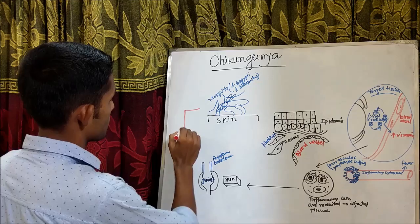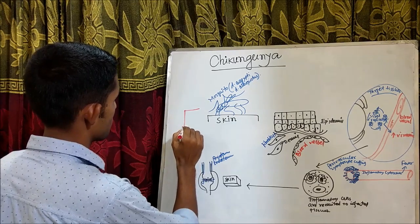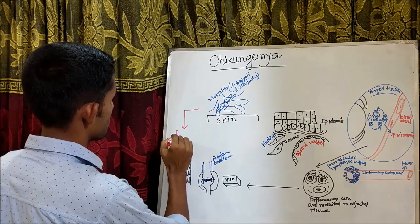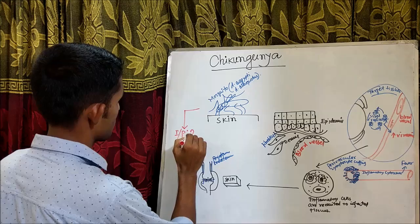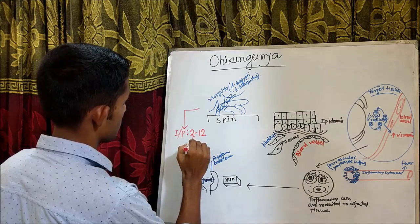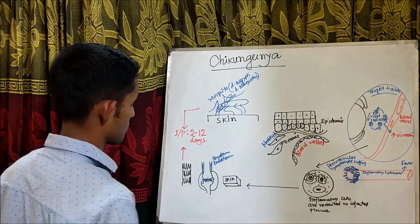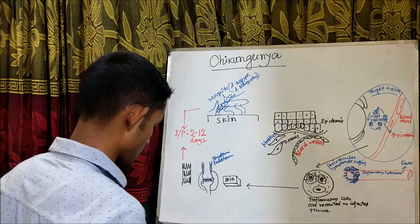In Chikungunya, the period between exposure to an infection and the appearance of the first symptom — that means the incubation period — is 2 to 12 days.